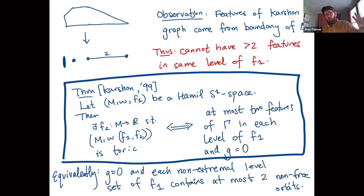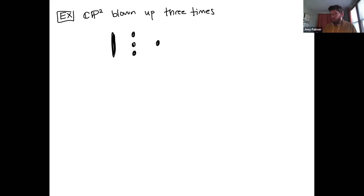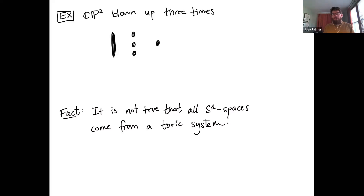Here's a quick example: you can have a valid Karshon graph where at a single level of F1 there are three different fixed points. This can never come from a toric integrable system because there's no room for a third feature — one goes on top, one on the bottom, and there's nowhere else for the third one. So not all S^1 spaces come from a toric system; complexity one spaces are a much richer group.